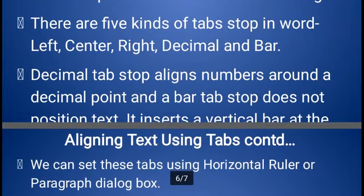The decimal tab stop aligns numbers around a decimal point. A bar tab stop does not position text — instead it inserts a vertical bar at the insertion point. For example, with decimal tab, if you have multiple values with decimal points, all the decimal points will align in a line. The bar tab will create a column line between two series, generating a vertical line between two columns of data so it looks like a table.